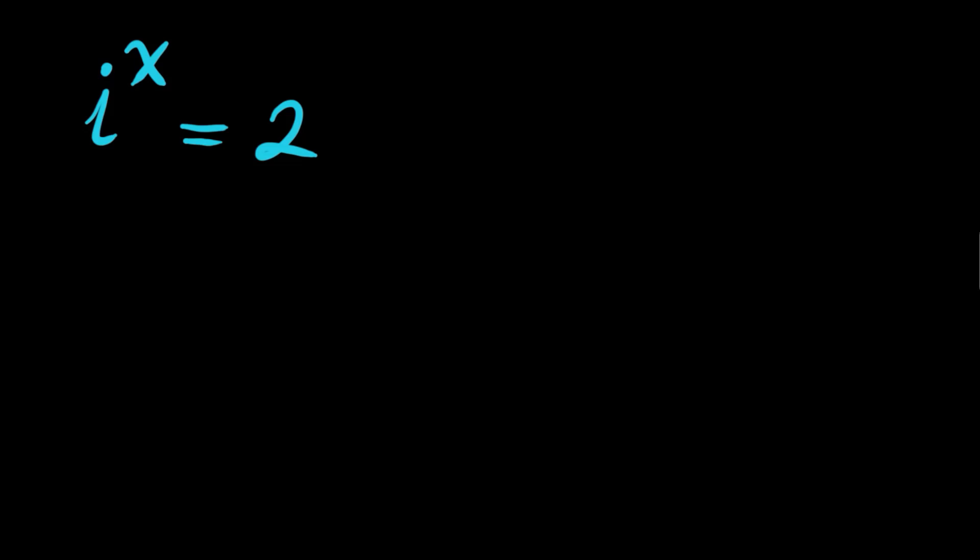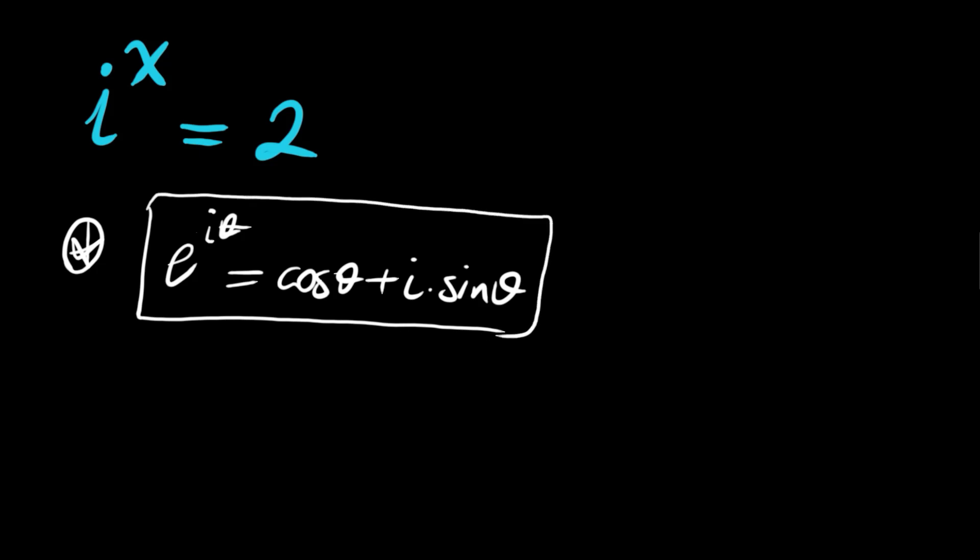i to the power x equals 2 should have complex solutions. We will use Euler's identity, or Euler's notation actually, to solve this. That is, we have e to the i theta is equal to cosine theta plus i times sine theta. This is our notation for complex numbers; any complex number can be shown using this identity.